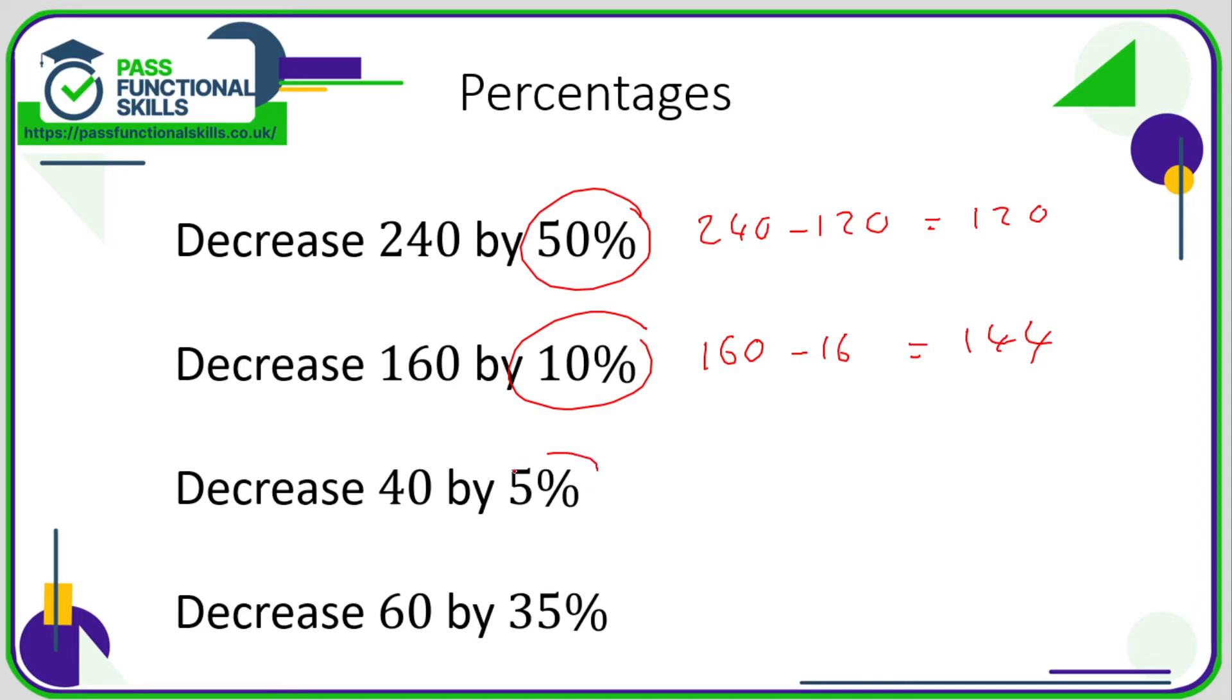For this question, what is 5% of 40? 10% is 4, so 5% is 2. So we need to subtract 2 from 40, and we get 38.